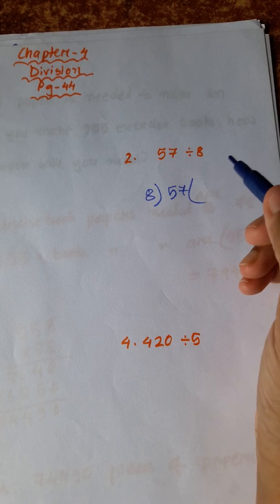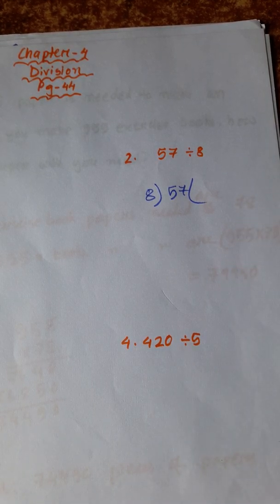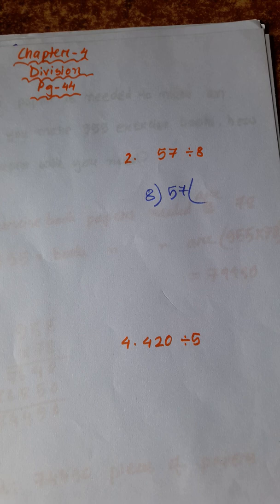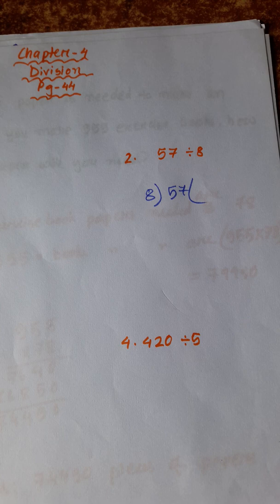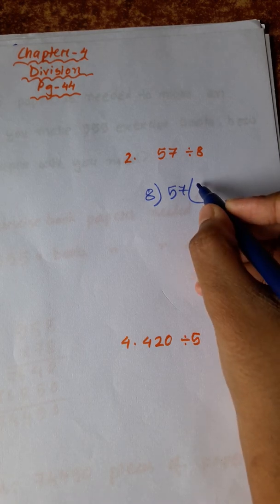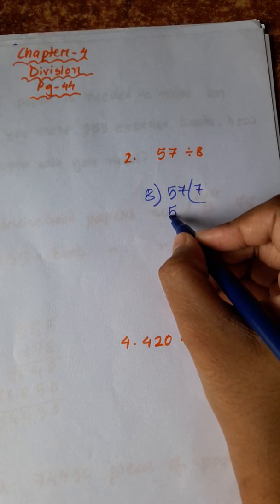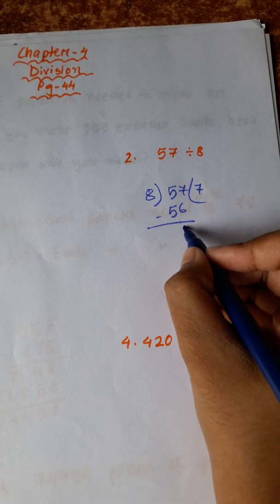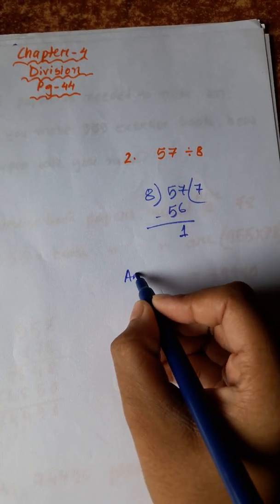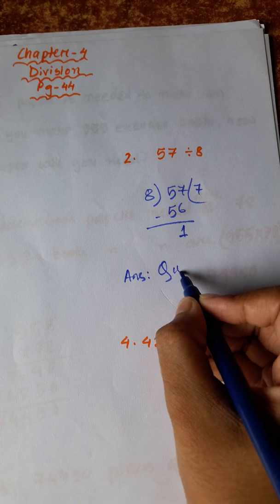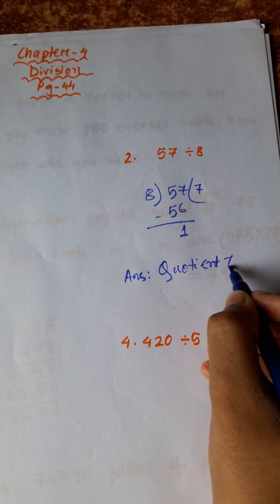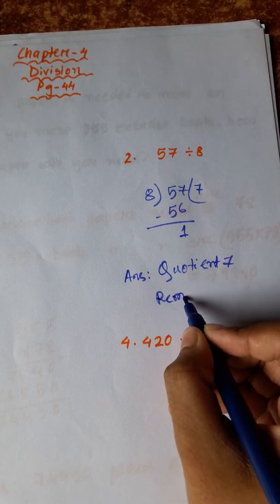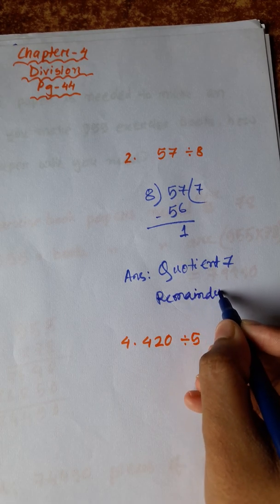So, answer quotient 6. Next problem: 8 ones are 8, 8 twos are 16, 8 threes are 24, 8 fours are 32, 8 fives are 40, 8 sixes are 48, 8 sevens are 56, 8 eights are 64. So therefore, 8 sevens are 56, remaining 1. So answer: quotient 7, remainder 1.